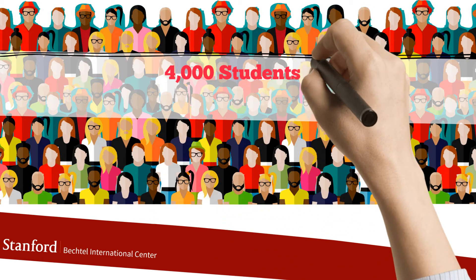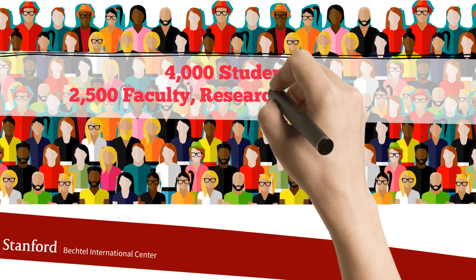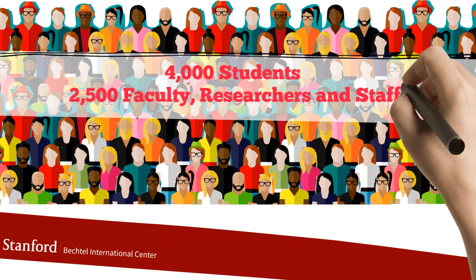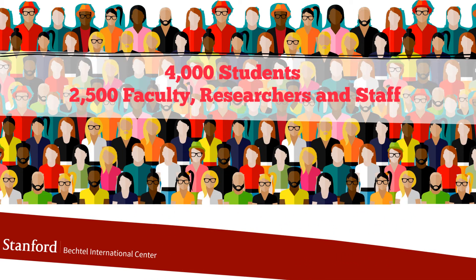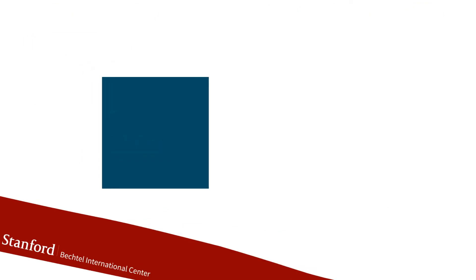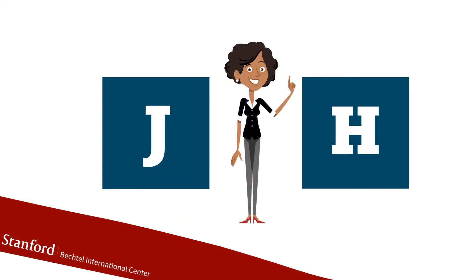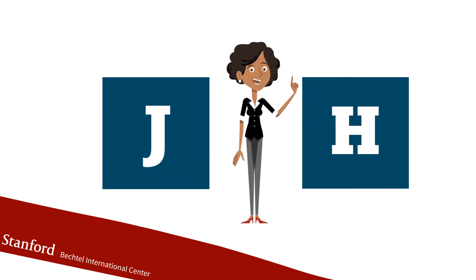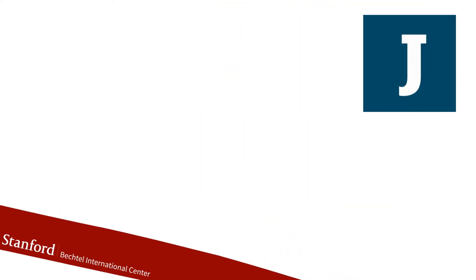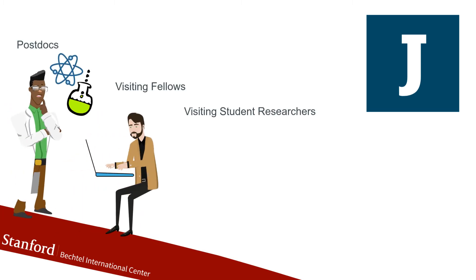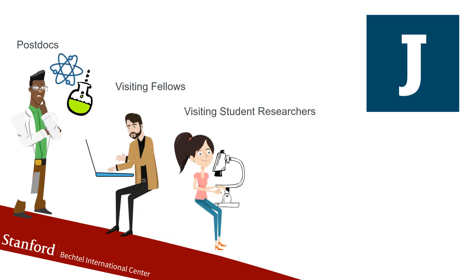This ends up being about 4,000 students and over 2,500 faculty, researchers and staff annually. For faculty, researchers and staff, we use the J and H visas primarily. What is the difference between the two? At Stanford, we decide which visa to use by the affiliation. The J is used primarily for postdocs, visiting fellows, visiting student researchers and for visiting scholars.